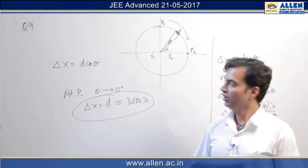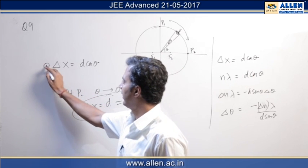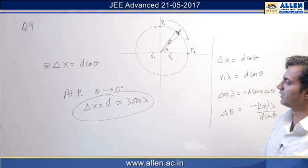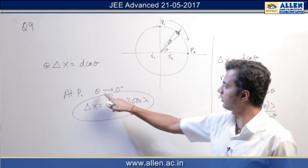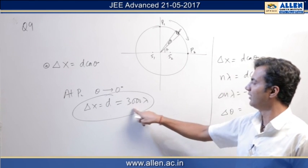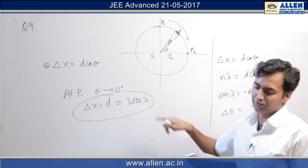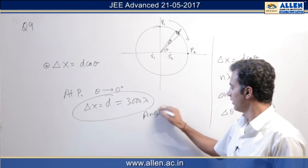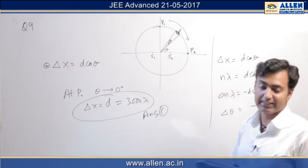So we use the relation delta x equals d cos theta for the general path difference expression. At P2 we can put theta equals to 0 which would give us delta x equals d which is 3000 lambda, therefore c would be one of the answers. This also eliminates A as an answer.